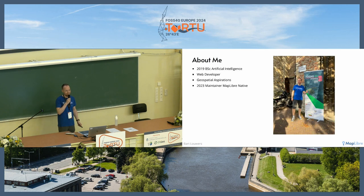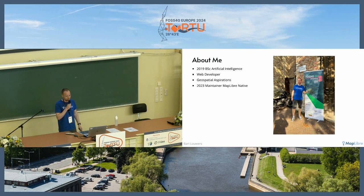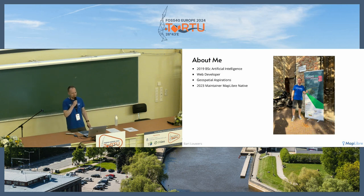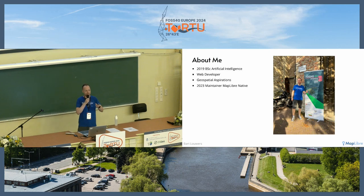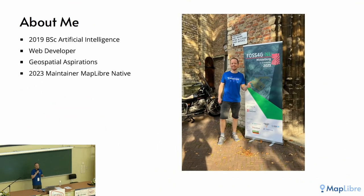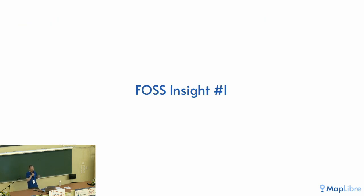This is me at FOSSGIS GNL last year — I really like my job. At FOSSGIS GNL, there was a keynote speech where the speaker asked the audience who was working for a company, who was in education, and who was working for government — basically covering all hands. But I didn't raise my hand yet, and this was at a FOSS conference. This gets us to the first free and open source insight: you can actually pay people for free and open source software.